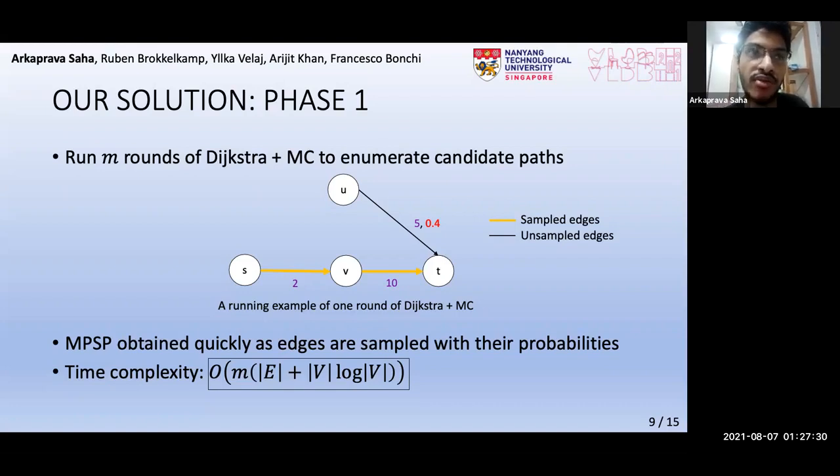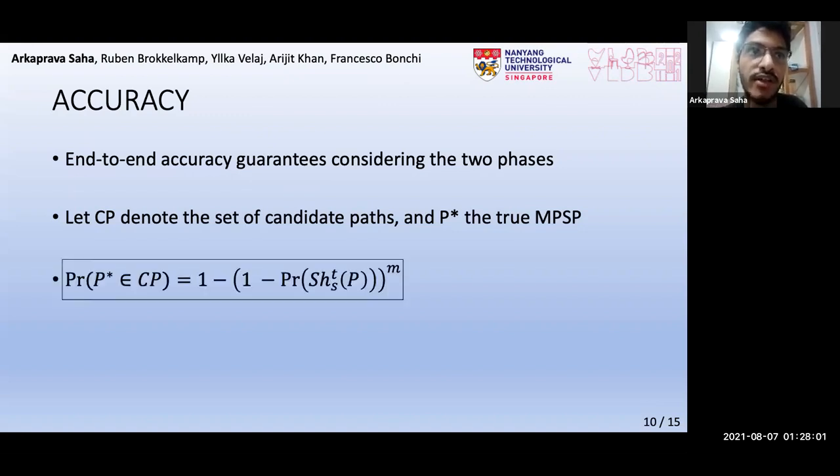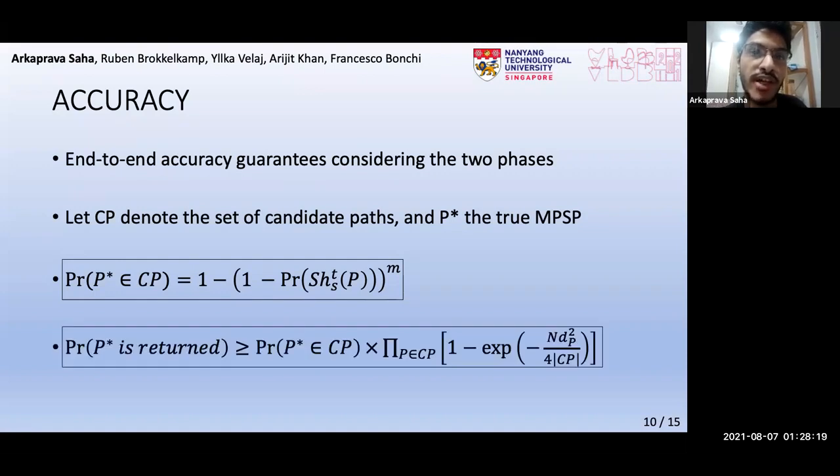Now, after the candidate paths are enumerated, we run the Luby-Karp algorithm in phase 2 as demonstrated before. We now provide end-to-end accuracy guarantees of our method considering our two phases. Of course, we would like to return the true MPSP P* with a high probability. First, if CP denotes set of candidates obtained by Dijkstra plus MC, then P* must be in CP, as otherwise it cannot be returned. This happens with a high probability, as shown in the third line. This implies that, for a reasonably high shortest path probability, M needs to be very small, as we said just now. Even if P* is in CP, we also need to ensure that P* is a path finally returned. This also happens with a high probability, as shown in the last line.